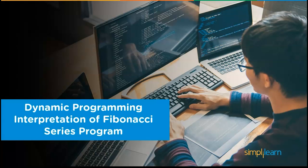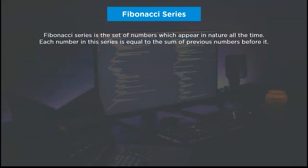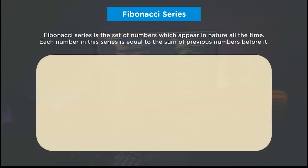Coming back to dynamic programming, we'll cover the mathematical interpretation of the Fibonacci series program. The Fibonacci sequence is a group of numbers that frequently appears in nature. Each number in this series is the sum of the two previous numbers that come before it.